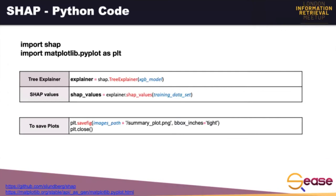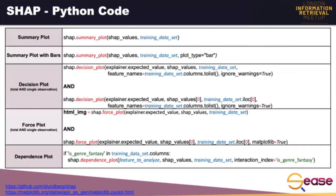Now here are two slides with the Python code about what has been described so far. You have to import the necessary libraries — SHAP and Matplotlib, which is a useful visualization library for rendering graphs in Python. We set the explainer — in our case, the Tree Explainer — and the plots are generated after the computation of the SHAP values. We use the TreeSHAP algorithm to estimate them for tree-based models. Then this is an example of how to save the plot using Matplotlib. I put here the code as an example to generate all types of plots, and we will share the presentation slides after the meetup so you can consult them later.